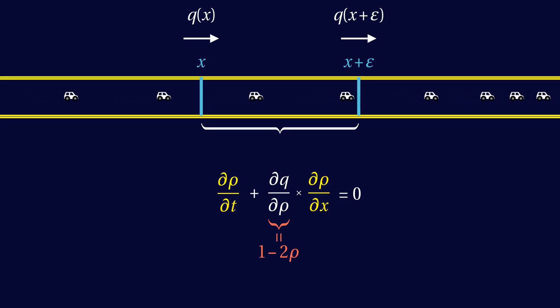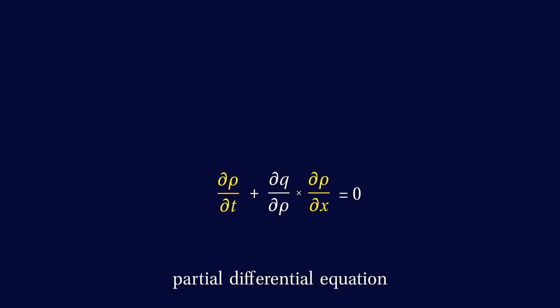Equations like this are called partial differential equations. The word differential indicates that they involve derivatives. The word partial, that there are derivatives with respect to several variables, here t and x. There is no general method to solve partial differential equations, but this one allows a nice trick, known as the method of characteristics.